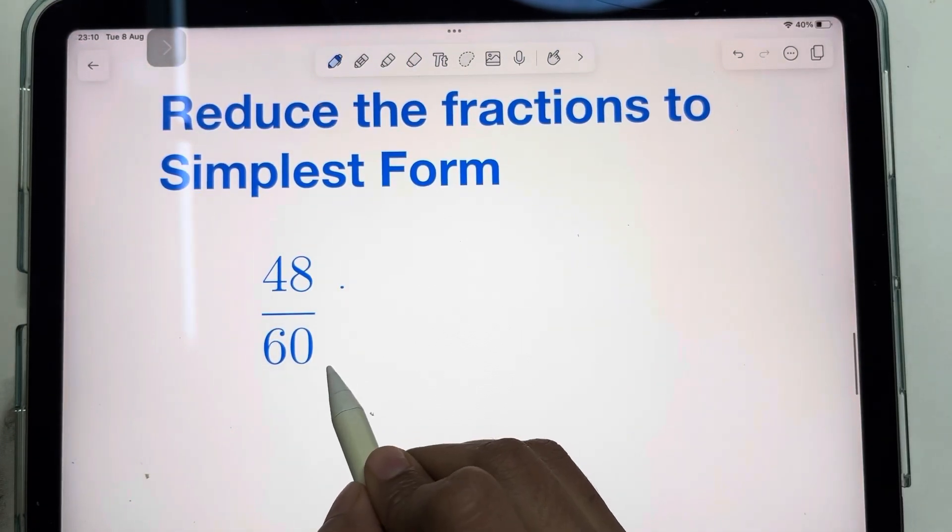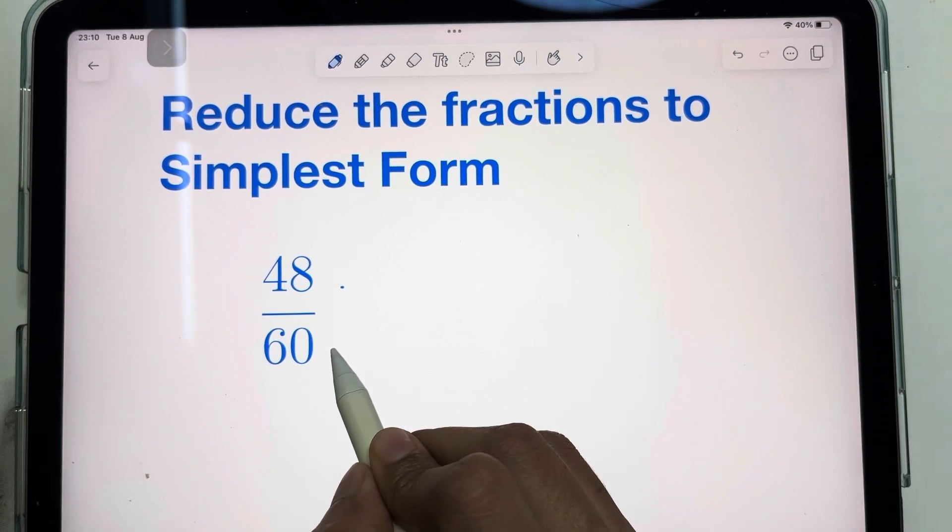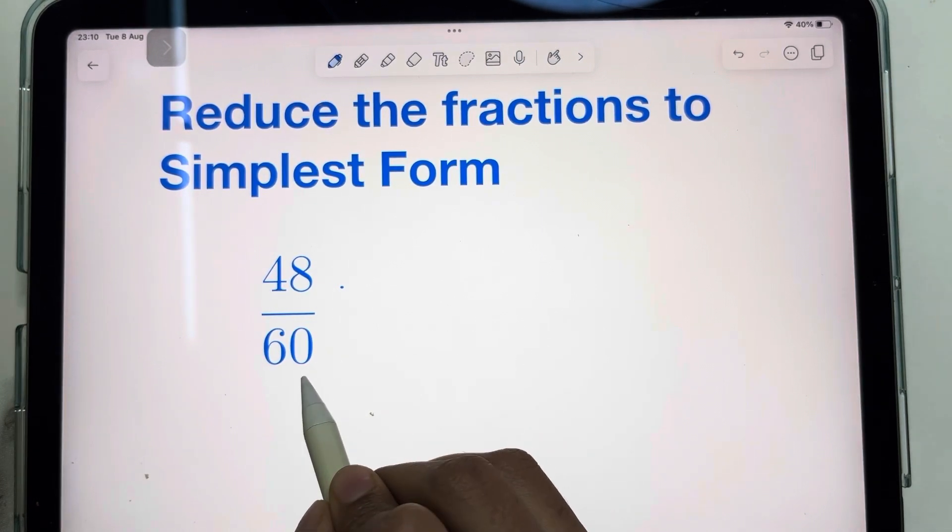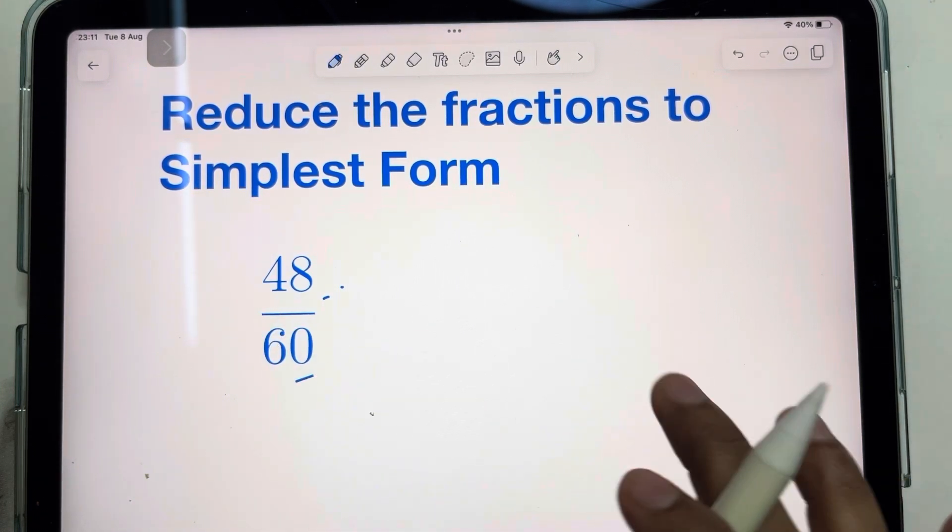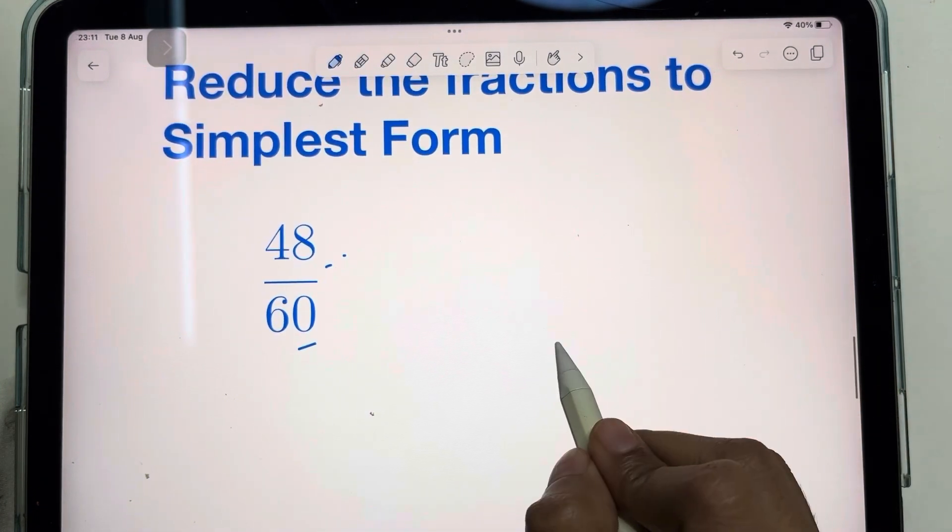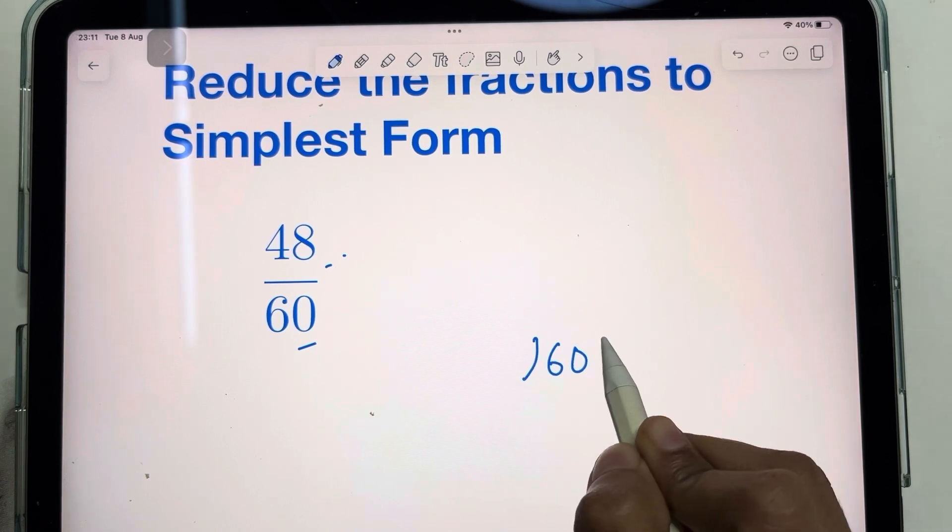So first we will find the highest common factors of 48 and 60. For this, divide the larger number by the smaller number. It doesn't matter whether it is denominator or numerator. Just divide the bigger number by the smaller number.